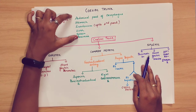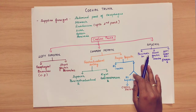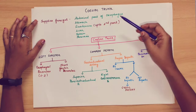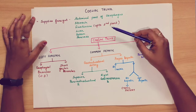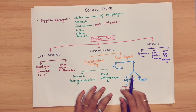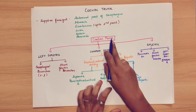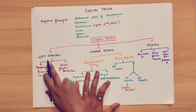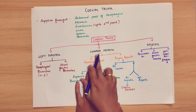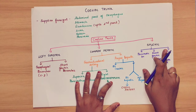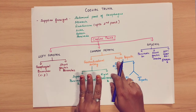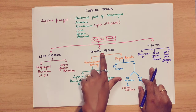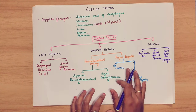This is the celiac trunk. To repeat: abdominal part of the esophagus, stomach, duodenum up to the second part, liver, spleen, and pancreas. In the celiac trunk, there are 3 branches: first, the left gastric artery; second, the common hepatic artery; third, the splenic artery.